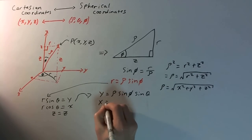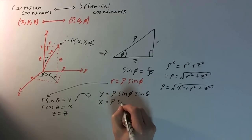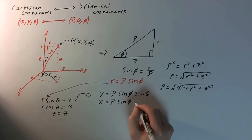x is going to be equal to, again, r, rho sine phi, cosine theta. And what's z?